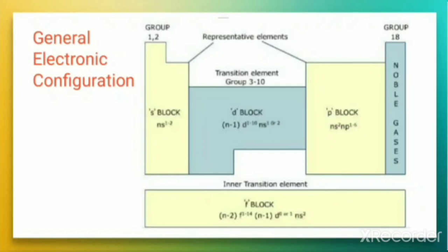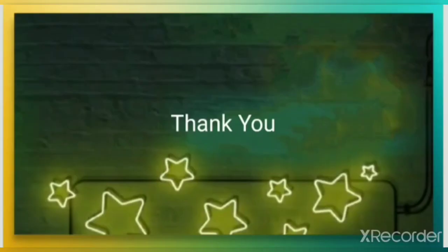To summarize the general electronic configurations by block: s block is ns¹⁻²; p block is ns², np¹⁻⁶; d block is (n−1)d¹⁻¹⁰, ns¹⁻²; and f block is (n−2)f¹⁻¹⁴, (n−1)d⁰⁻¹, ns². On the basis of electronic configuration, we can find out the group and period for a particular element in the modern periodic table. From this we can conclude that electronic configuration tells us the position of an element in a particular period and group. Have a nice day, thank you.